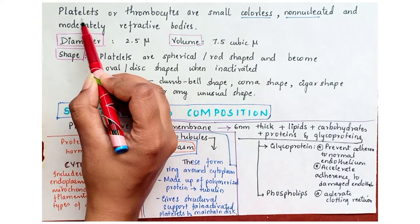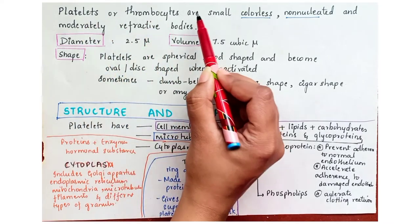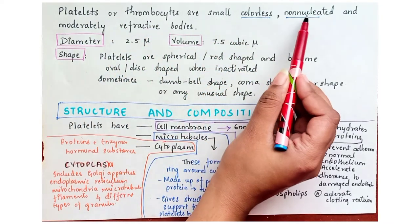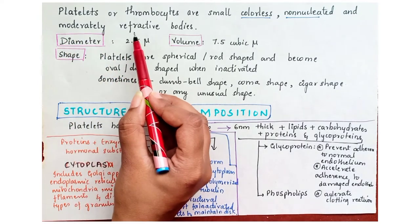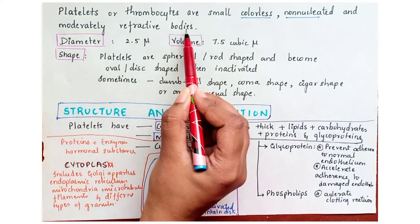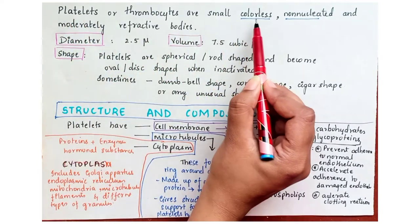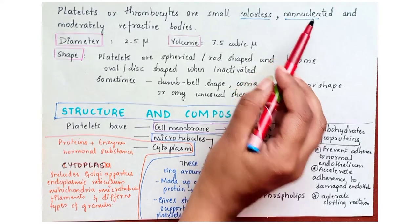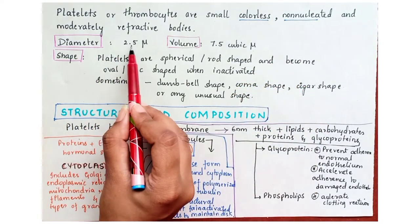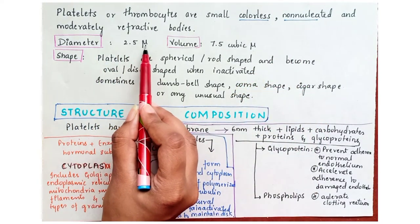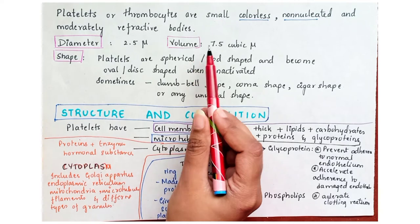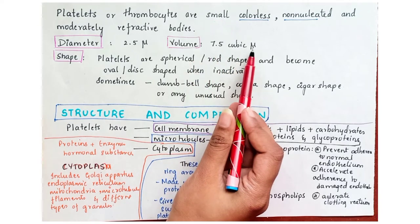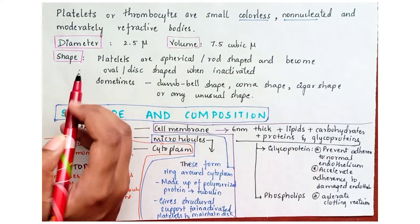Platelets or thrombocytes are small, colorless, non-nucleated and moderately refractive bodies. The diameter is 2.5 micron and the volume of the platelets is 7.5 cubic micron.